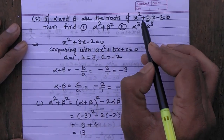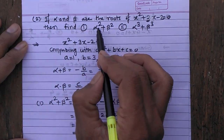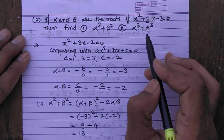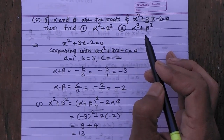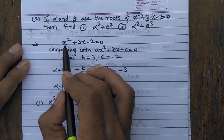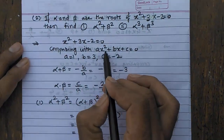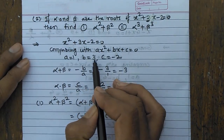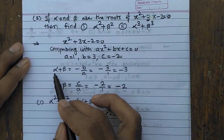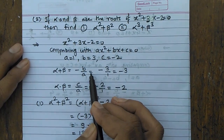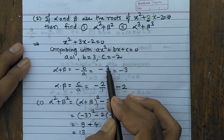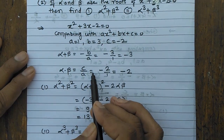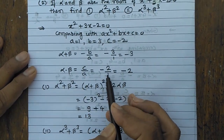Second example: if alpha and beta are the roots of x square plus 3x minus 2 equals zero, find alpha square plus beta square and alpha cube plus beta cube. First write the given equation: x square plus 3x minus 2 equals zero. Comparing with standard form, a equals 1, b equals 3, c equals minus 2. Sum of roots: alpha plus beta equals minus b upon a equals minus 3. Product of roots: alpha times beta equals c upon a equals minus 2.